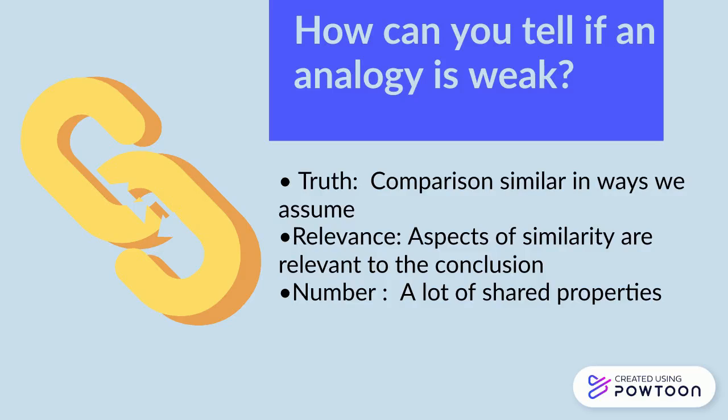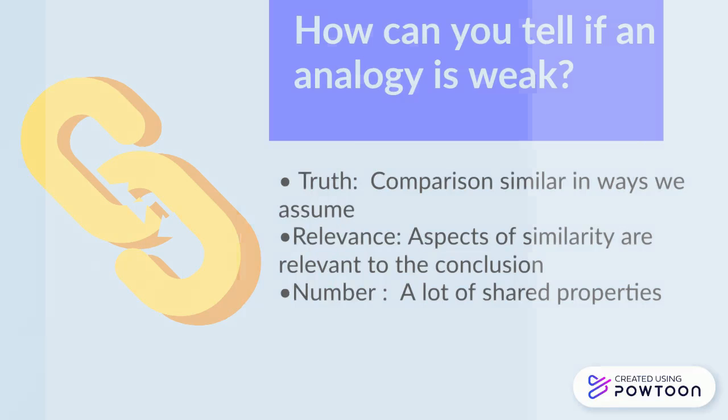And for number, if we discover a lot of shared properties between two objects and they are all relevant to the conclusion, then the analogical argument is stronger than when we can only identify one or a few shared properties, making it a weak analogy.